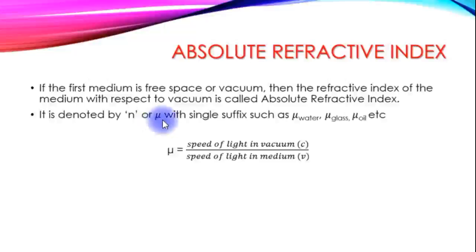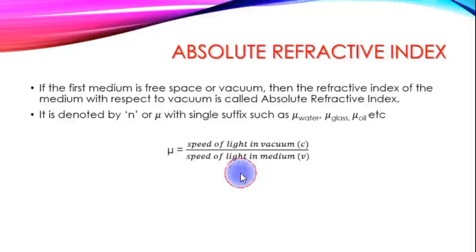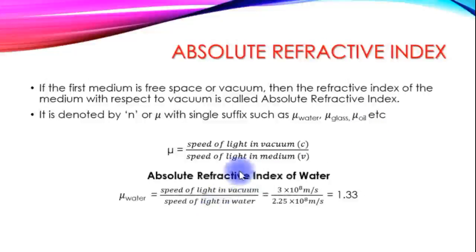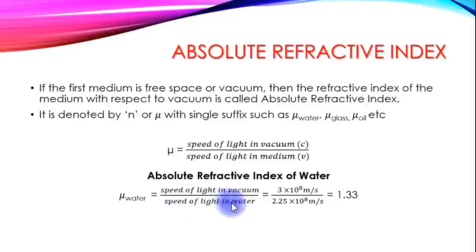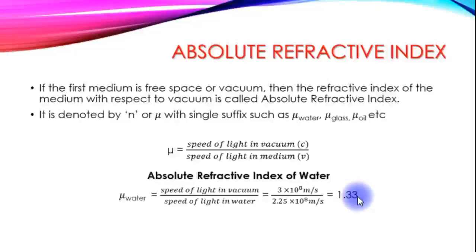The absolute refractive index uses a single suffix, such as water, glass, or oil. For example, the absolute refractive index of water: speed of light in vacuum divided by speed of light in water is 2.25×10⁸ m/s, which gives 1.33.